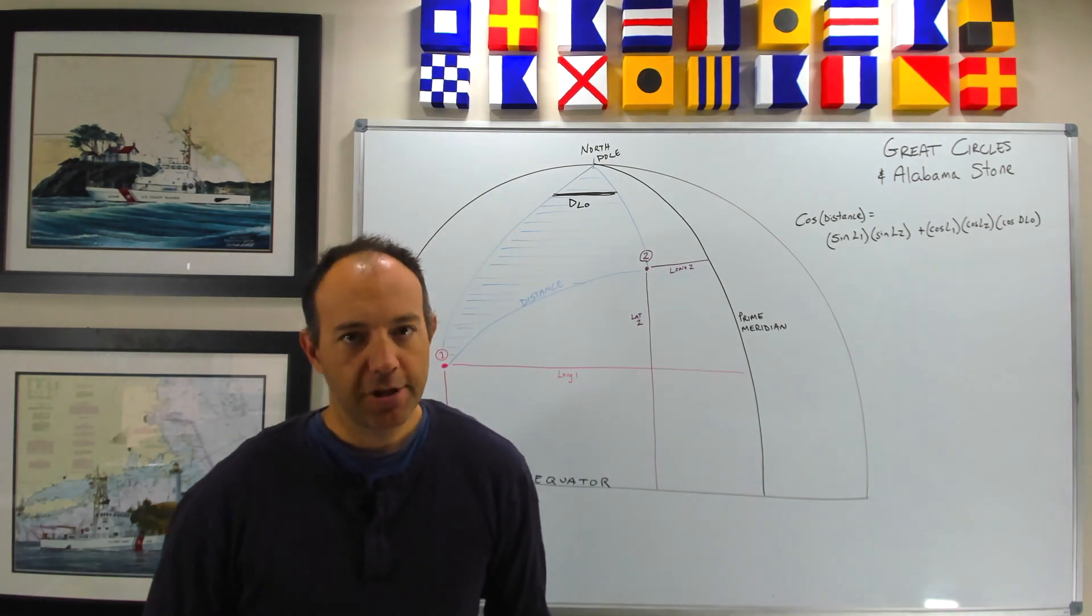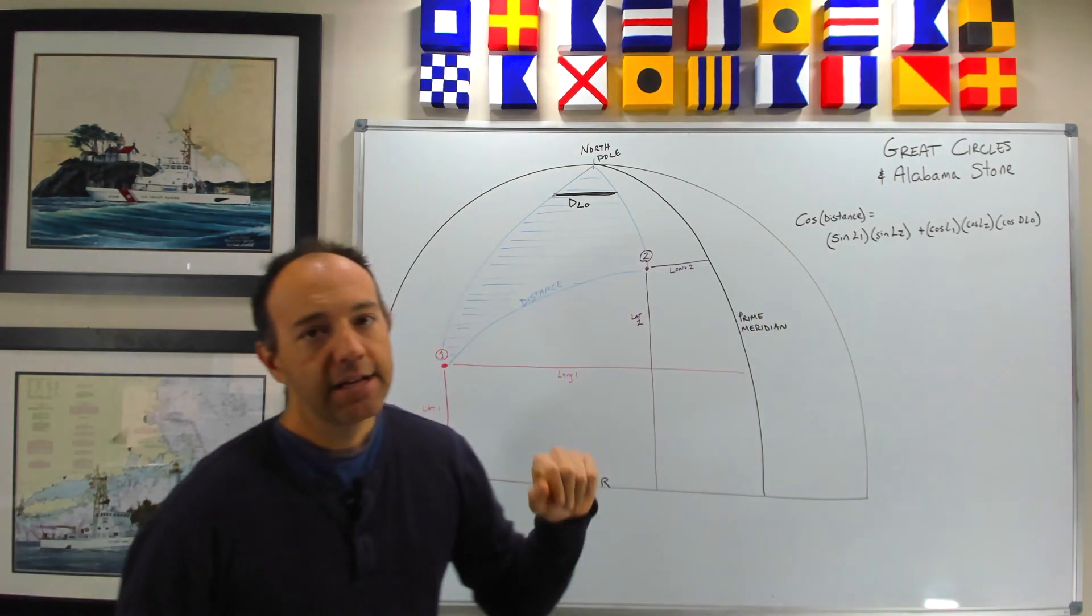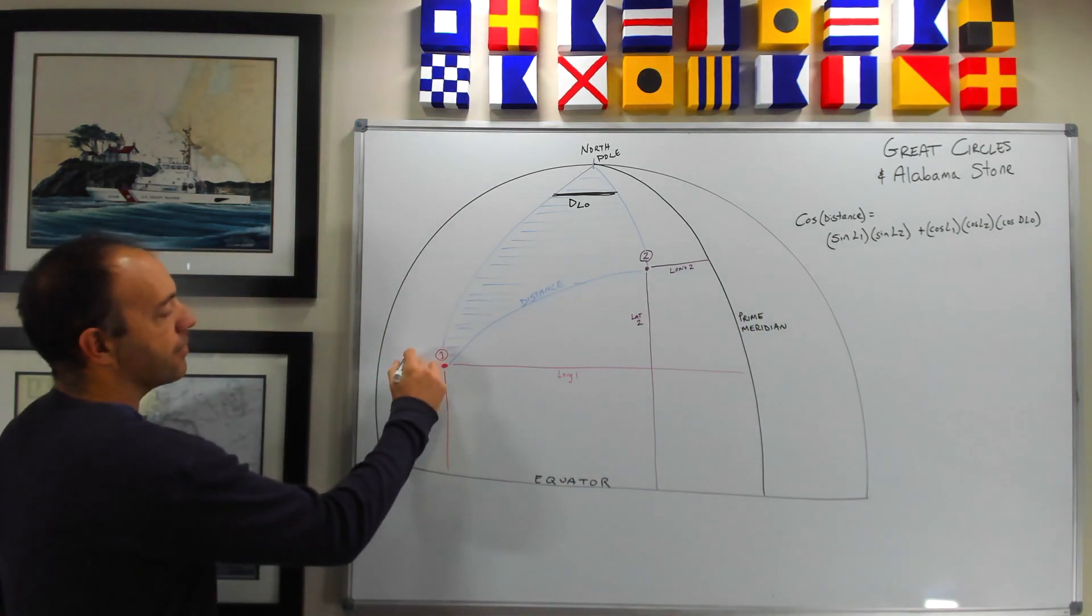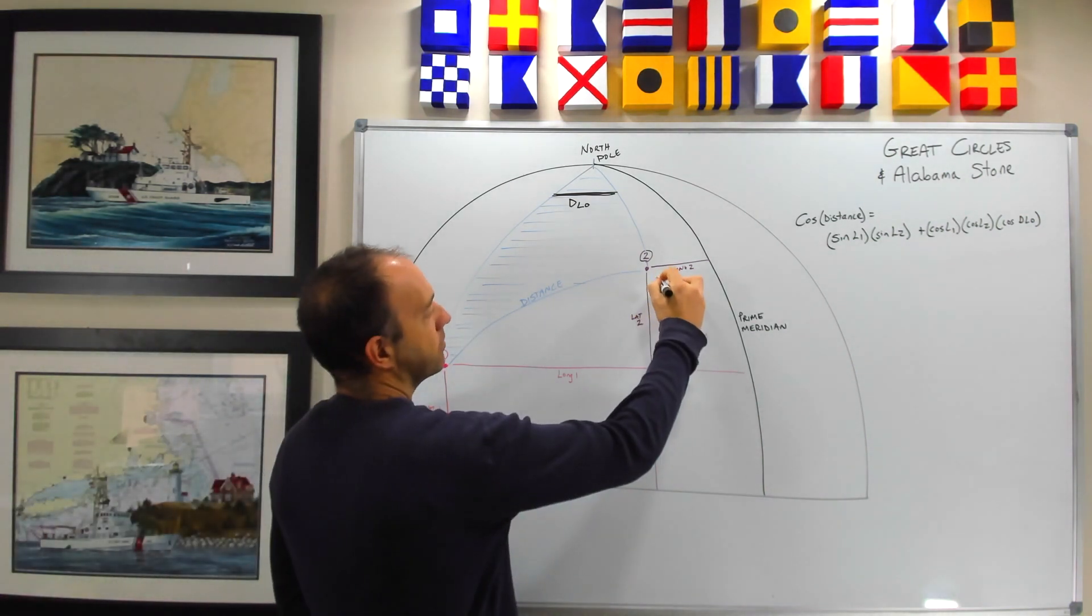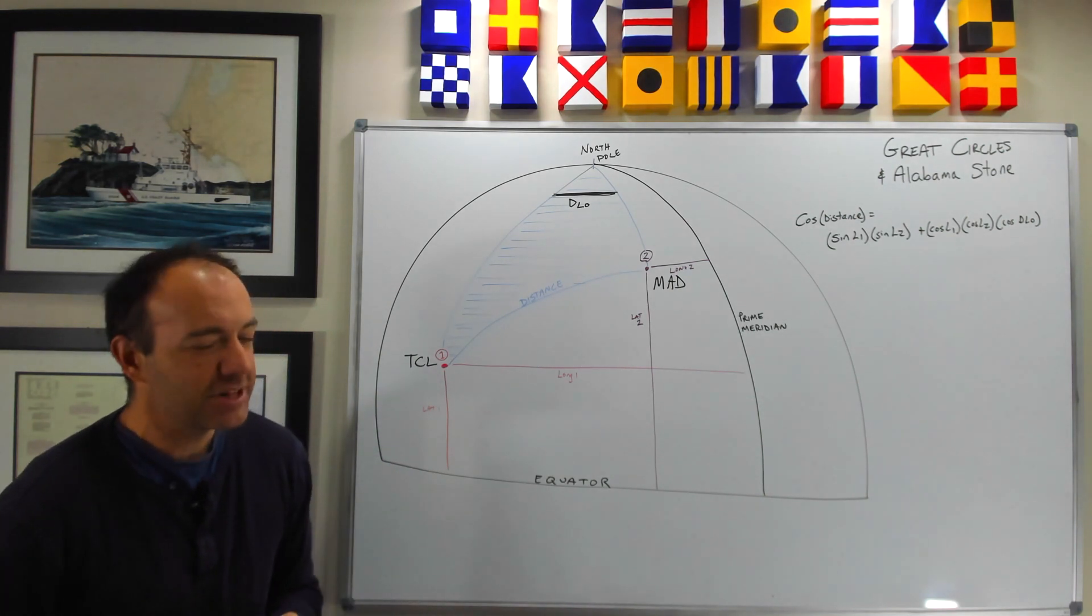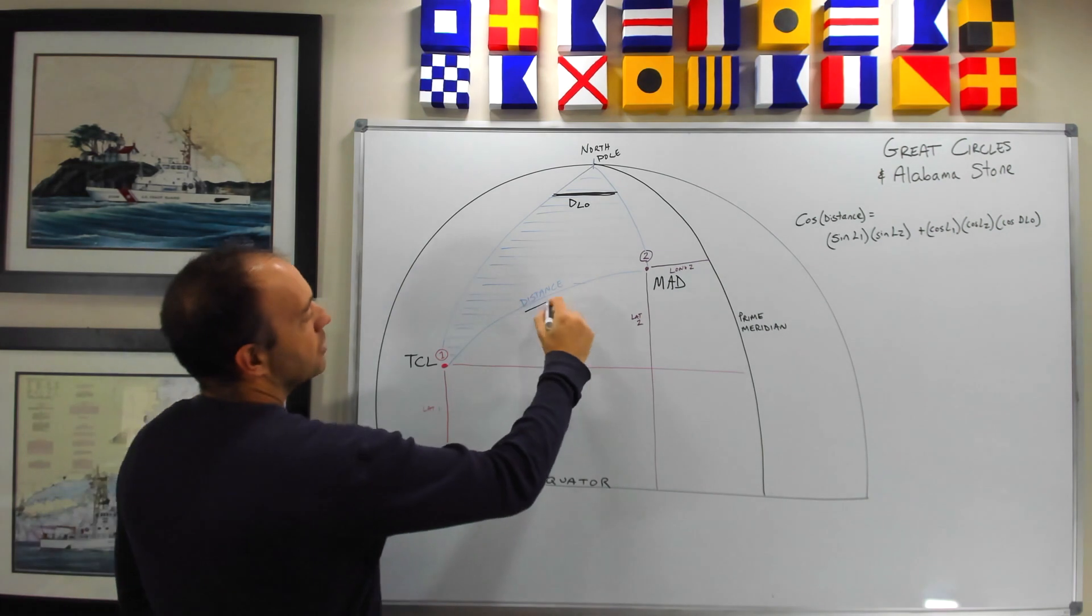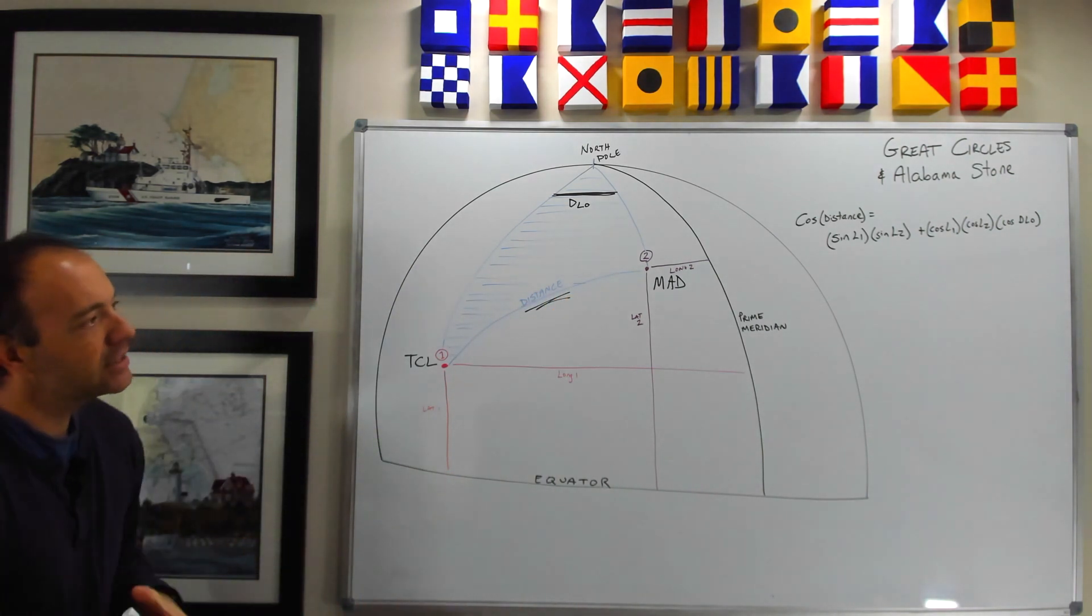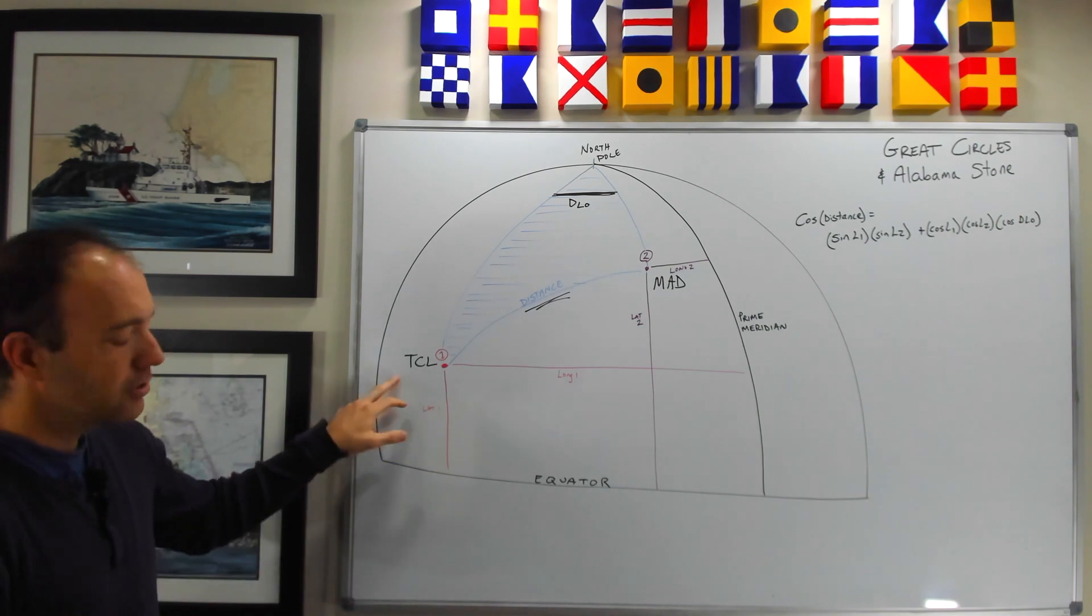So as an example of this great circle sailings problem in calculating distance, let's calculate the distance between Tuscaloosa, Alabama and Madrid, Spain. Maybe you were taking a flight between them. I don't think there's any airlines that fly directly between them. But what would be the distance between these two points? Well we know the latitude and the longitude of these and so for Tuscaloosa, Alabama...